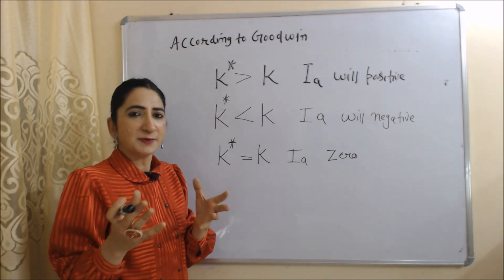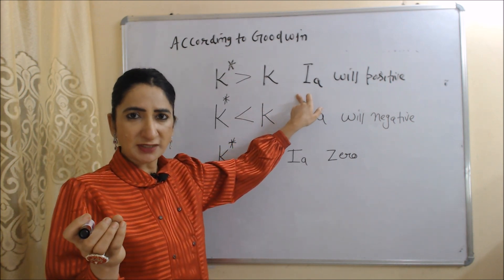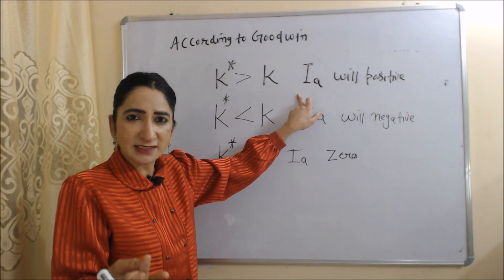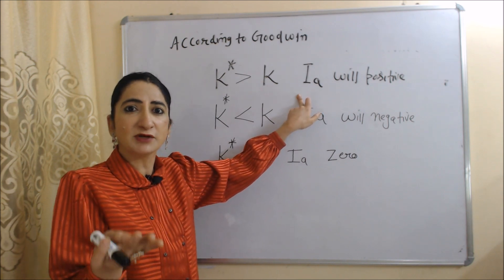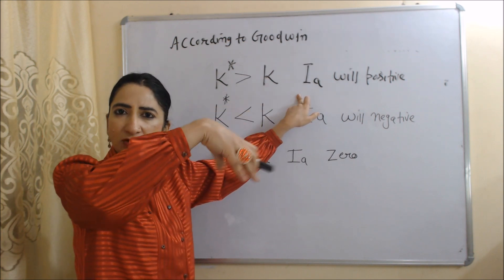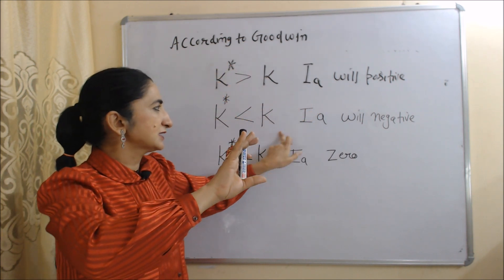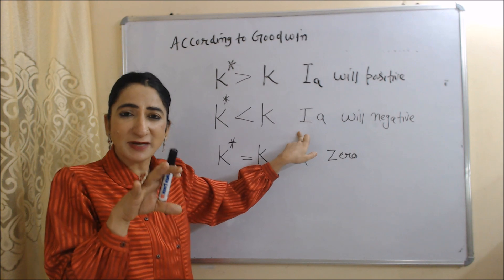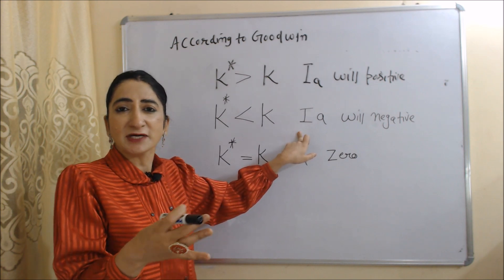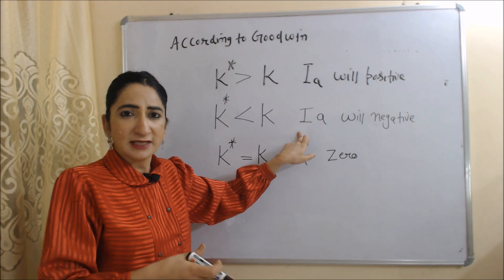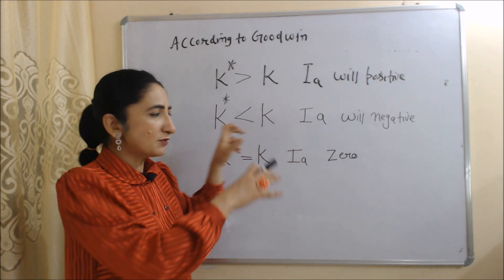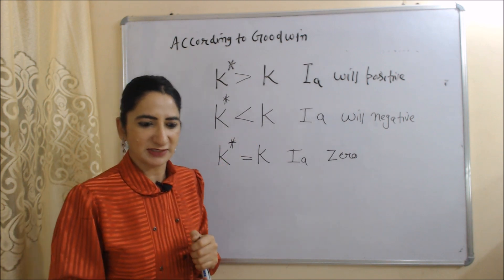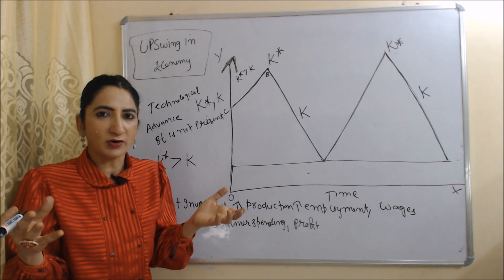When net investment increases, employment will also increase, production increases, wages increase, consumer spending increases, and producer profit increases — as a result, our economy will go up. On the other hand, when net investment falls, production falls, employment falls, wages fall, consumer spending falls, and ultimately profit of producers will also fall, and our economy will go down. So the gap between K* and K creates fluctuation in economic activities.